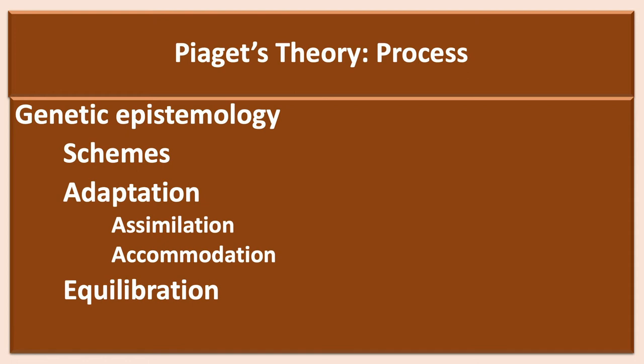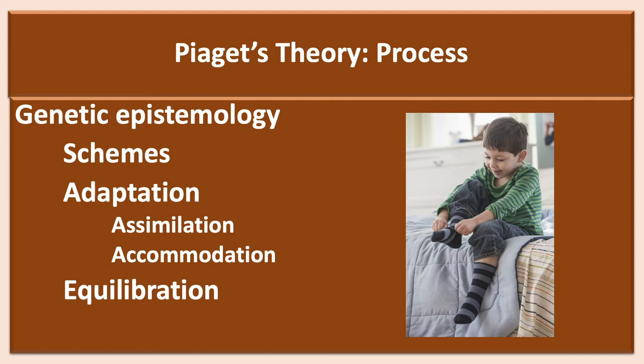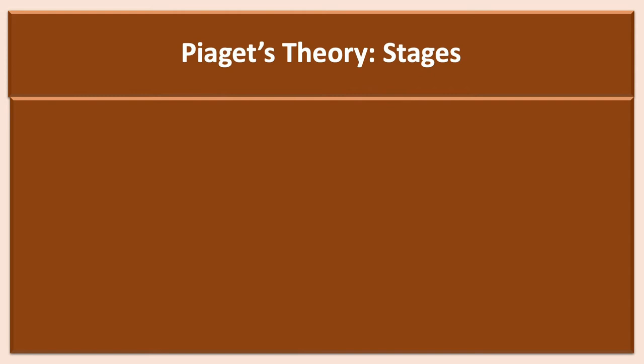The term Piaget uses for the success of adapting to the environment is equilibration — meaning the schemes that have been created allow the individual to achieve equilibrium with the demands of the environment. For example, learning to dress oneself is a relatively complicated task: one must put on underwear first, then pants and shirt, and finally socks and shoes. Each task requires a slightly different skill set and a required order for completion. There are thousands of these mental representations that must be created, some of which must be replaced by better schemes as one grows and develops.